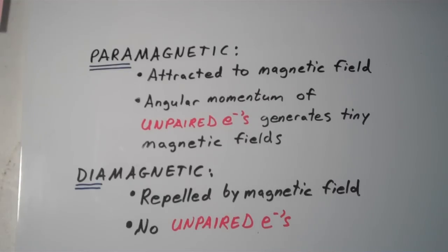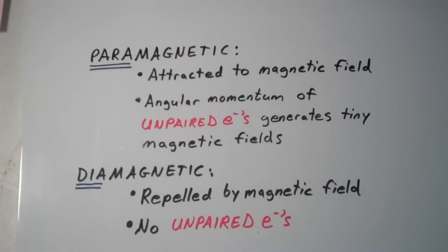One of those particular observations involves how certain substances interact with magnetic fields. A paramagnetic substance is attracted to a magnetic field. The reason why is because of the presence of unpaired electrons. Those unpaired electrons have an angular momentum that generates these tiny magnetic fields of their own. Any time you have a molecule that has unpaired electrons, that molecule is said to be paramagnetic and is therefore attracted to a magnetic field.